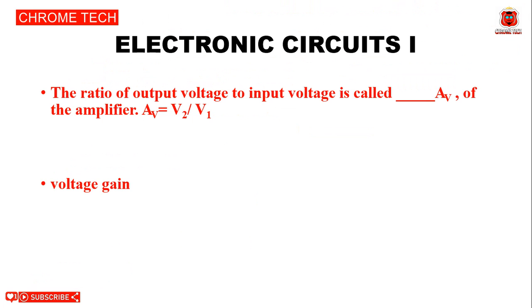Next question: The ratio of output voltage to input voltage is called dash Av of an amplifier, where Av = V2/V1. The answer is voltage gain.